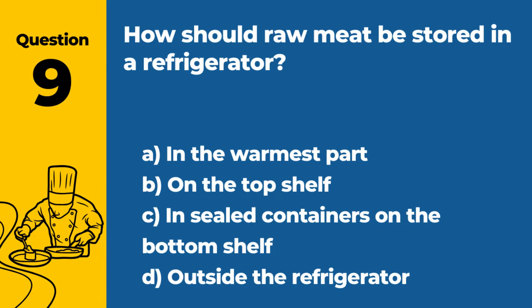Question 9. How should raw meat be stored in a refrigerator? a. In the warmest part. b. On the top shelf. c. In sealed containers on the bottom shelf. d. Outside the refrigerator. Answer c. In sealed containers on the bottom shelf. Raw meat should be stored in sealed containers on the bottom shelf to prevent juices from contaminating other foods.